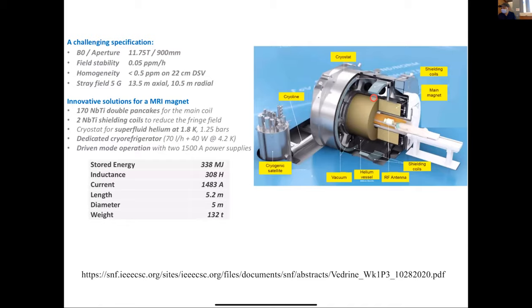The 11.7 T system stores over 300 megajoules of energy and has 1,500 amps of current running through it. Importantly, it is the first whole-body 11.7 T system — previous seven-Tesla systems could only fit a head, but this one can accommodate the full body.